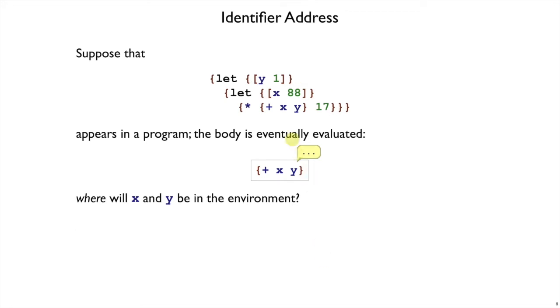If we change the program so that the plus xy is not immediately in the body of the let, but is under times, the answers are still the same. That's because times doesn't affect the environment. It's only let, or really lambda, let is just a pattern for lambda, that creates bindings in the environment. So we don't need to pay attention to this times to predict where x and y are going to be in the environment.